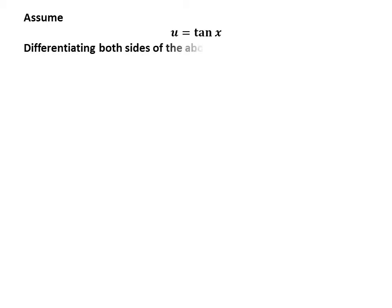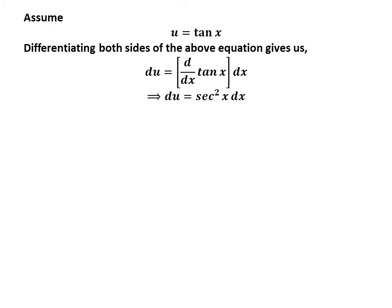Assume u is equal to tangent of x. Differentiating both sides of the equation gives us differential of u is equal to derivative of tangent of x times differential of x. We know the derivative of tangent of x is square of secant of x.